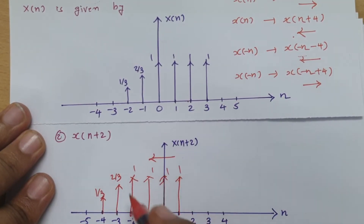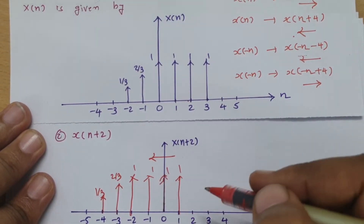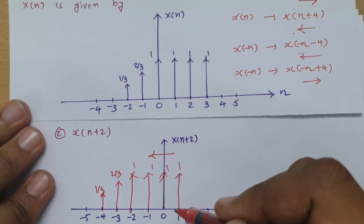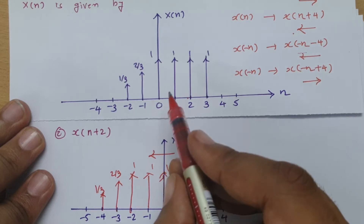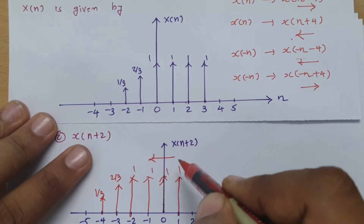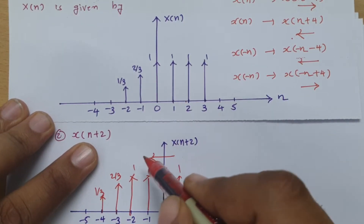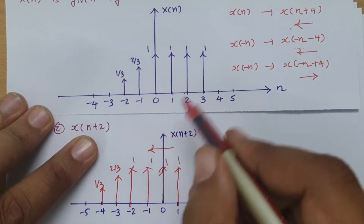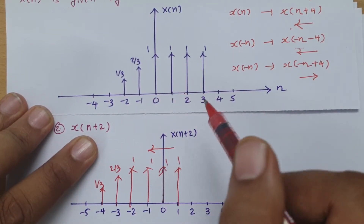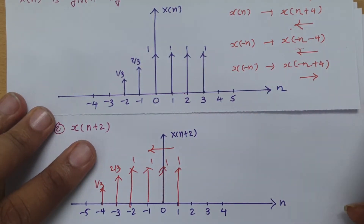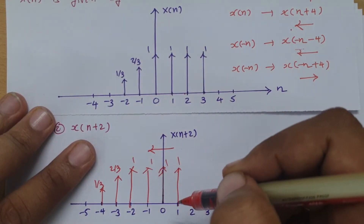This is graph shifting. In the previous session I showed reference shifting. Reference shifting goes in the opposite direction. For n+2, which is advancing, the graph is shifted to the left, but the reference is shifted to the right. This is where people get confused. In the previous session I explained reference shifting; now here I am showing graph shifting.